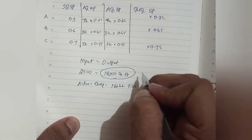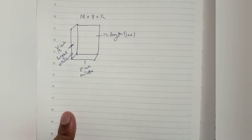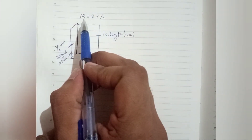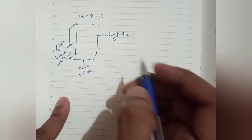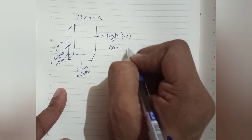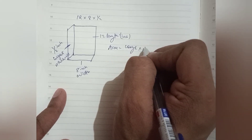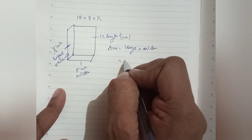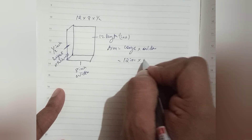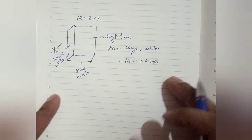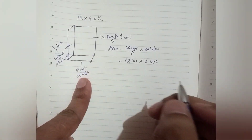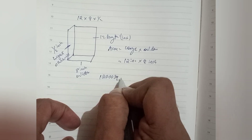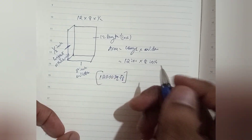We need to convert the number of tiles. The tiles are 12x8x1/2 inches — that means length is 12 inches, height is 1/2 inch, and we need to calculate the area: length times width. We need to convert this into square feet.